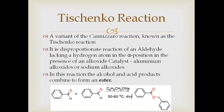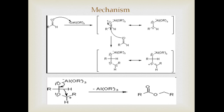Another variation of Cannizzaro's reaction is the Tishchenko reaction. It is a variant and a disproportionation reaction of an aldehyde lacking an alpha hydrogen, carried out in the presence of an alkoxide ion — usually aluminum alkoxide or sodium alkoxides — and the product obtained is an ester. In the mechanism, the aluminum alkoxide acts as a Lewis acid to coordinate with one molecule of aldehyde and facilitate addition of a second equivalent aldehyde, generating a hemiacetal intermediate. This molecule then undergoes intramolecular hydride shift, resulting in production of the aluminum-coordinated ester.